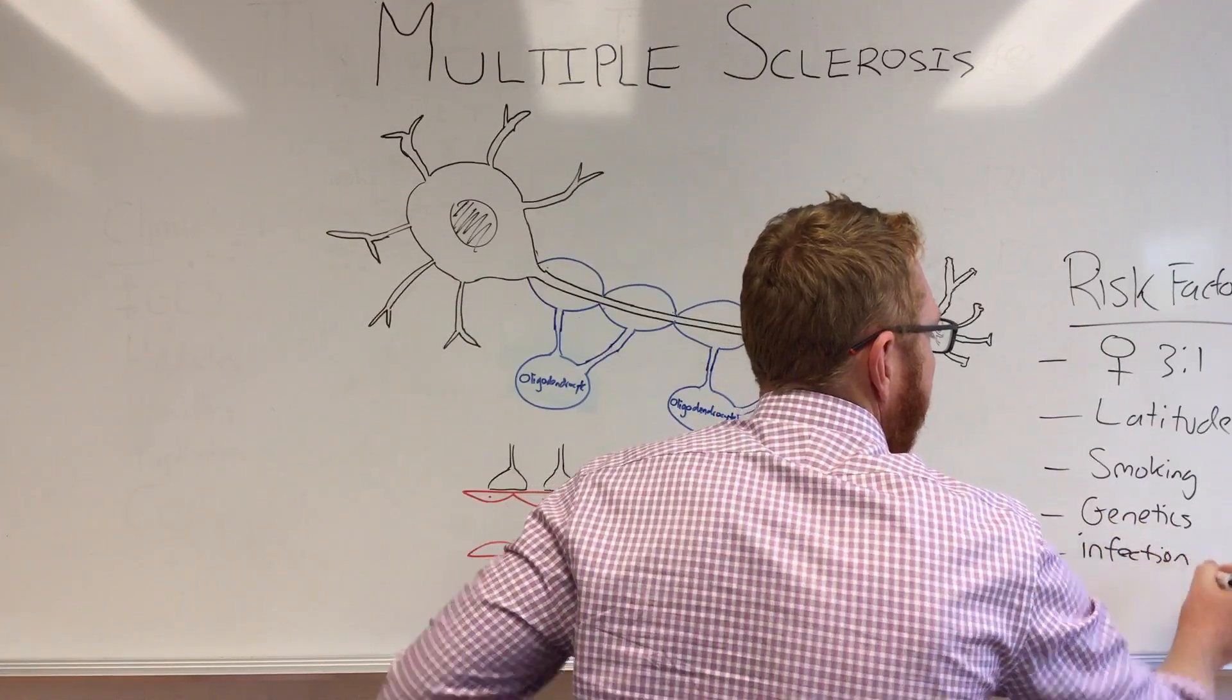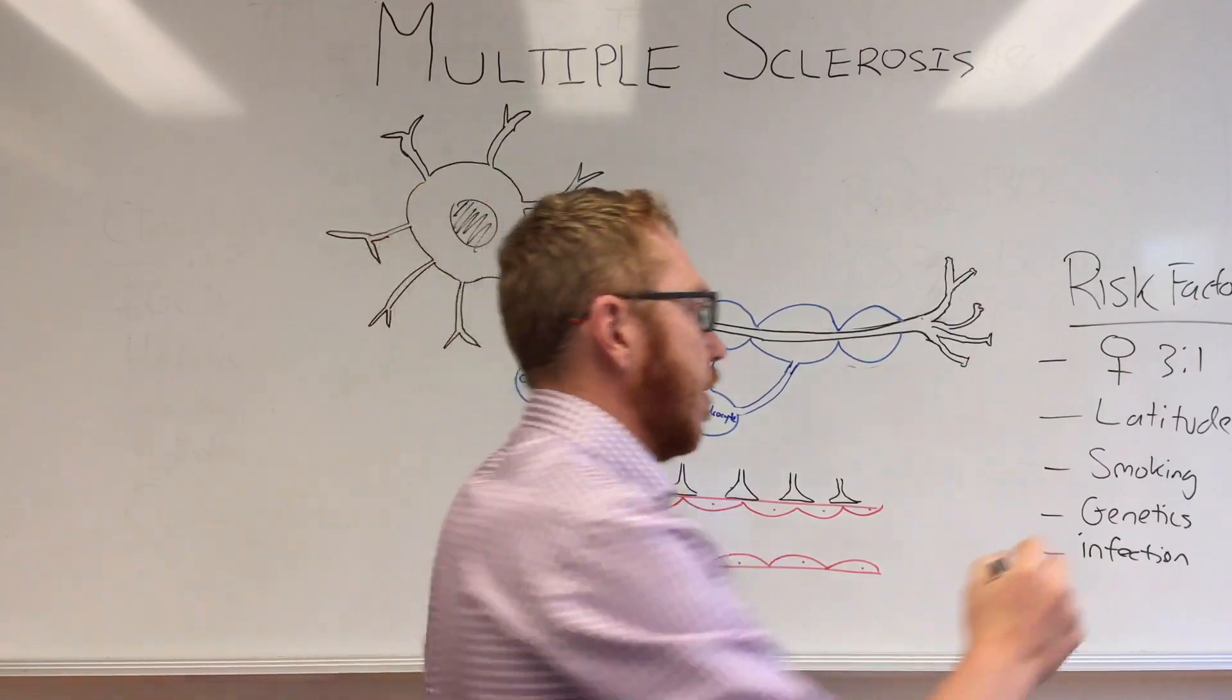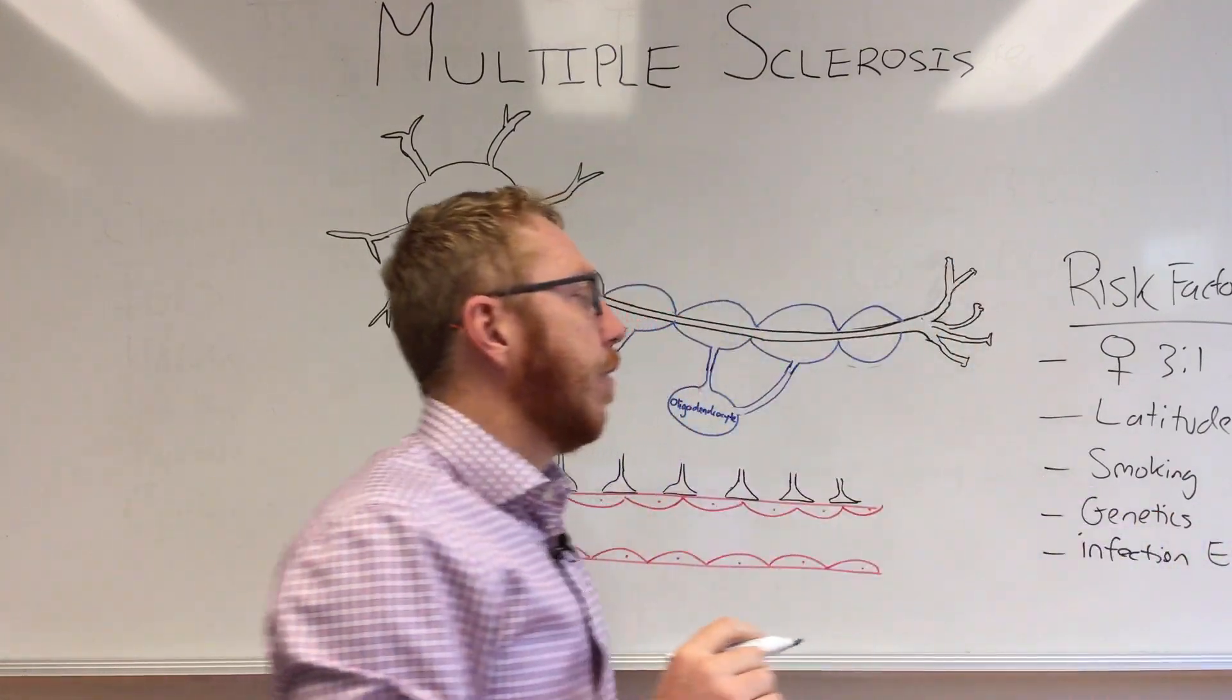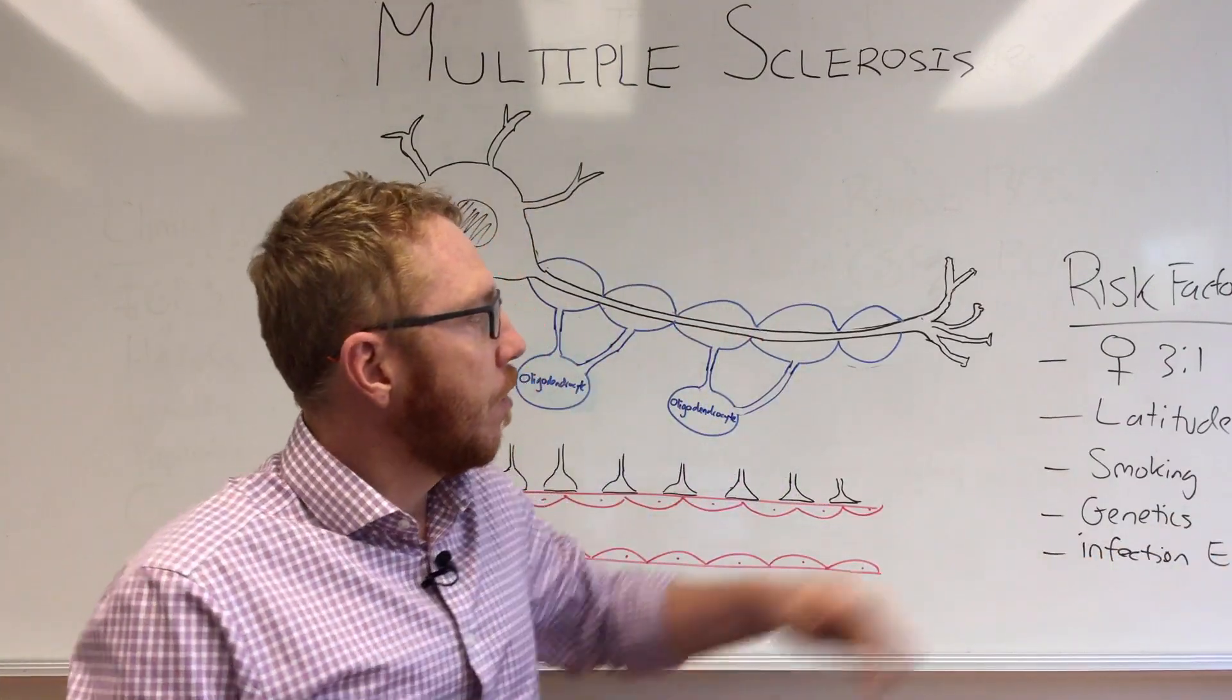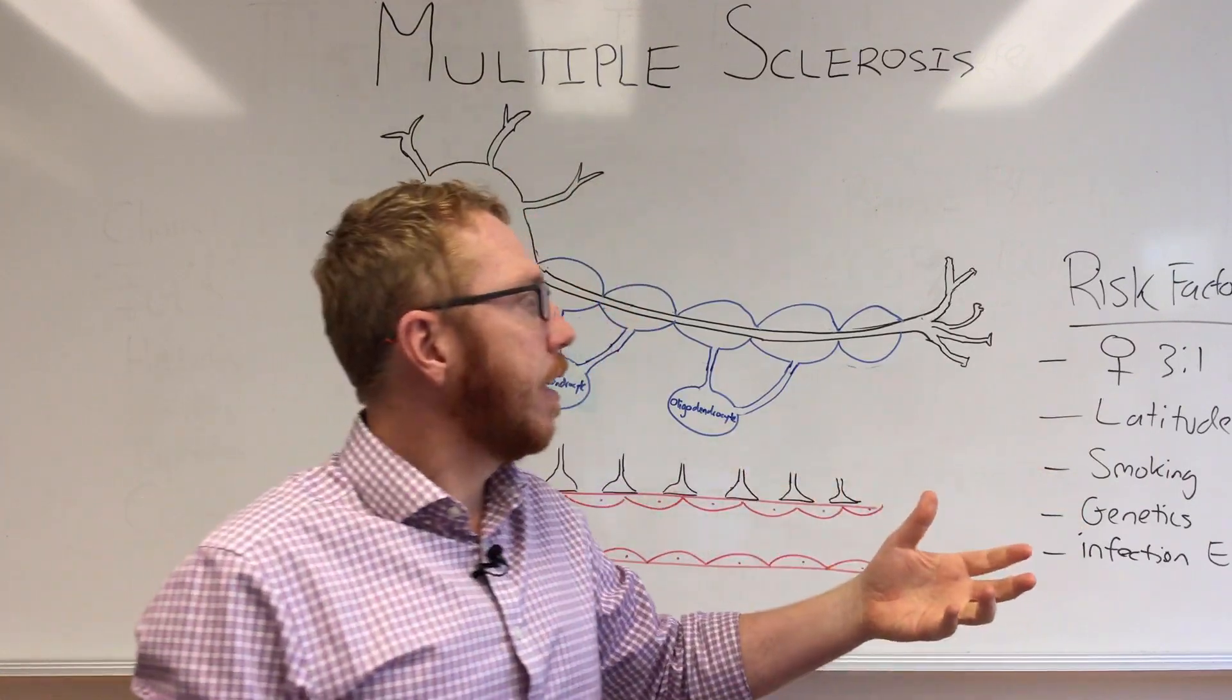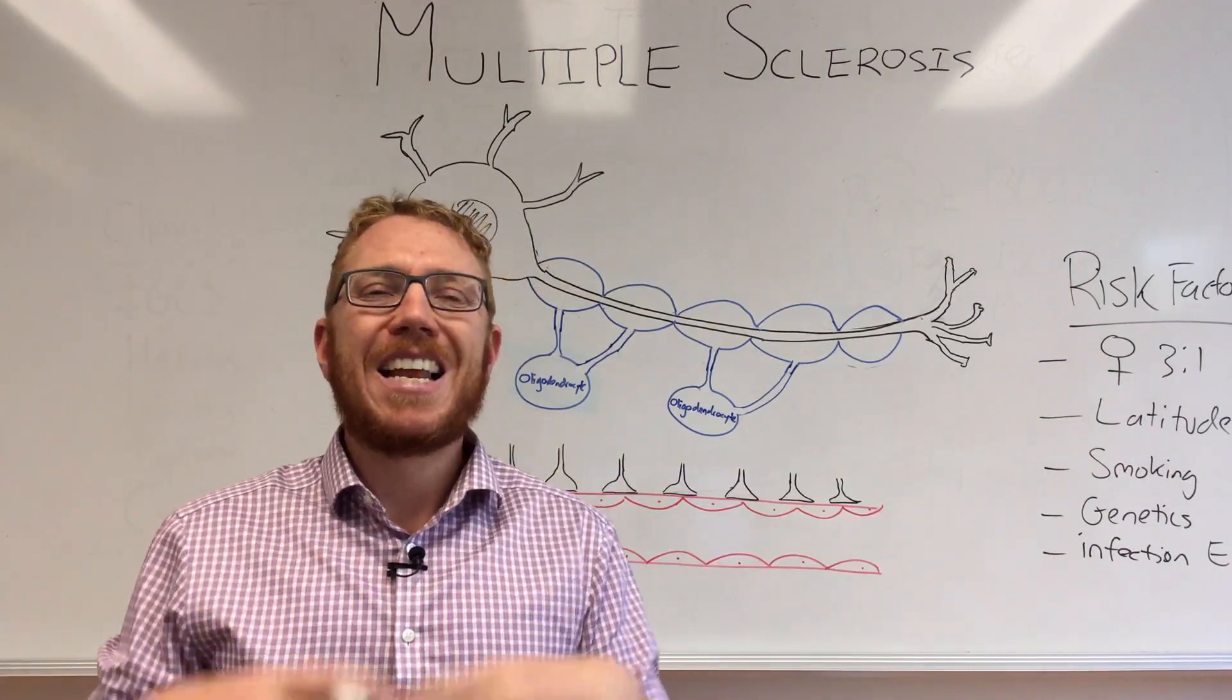There are a number of infections that are associated with MS, but the strongest one seems to be Epstein-Barr virus. There are other bacteria and viruses but it seems like Epstein-Barr has the strongest risk. These are the most common risks that are presented in the literature.